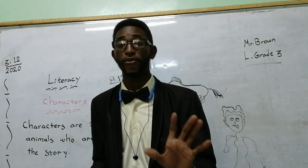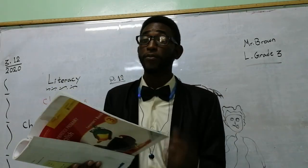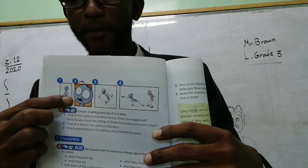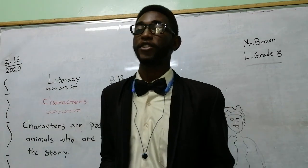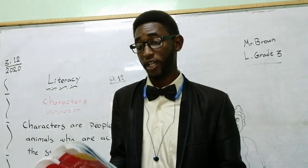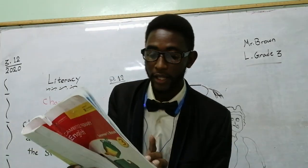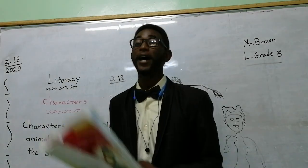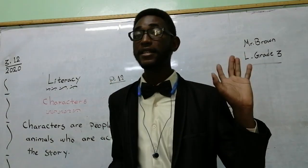Number two: write a description of the main character using interesting words to make him or her come to life. For example, if you named the character Tina, describe Tina using adjectives — the adjectives should be interesting. Number three: create another character of your own from your mind, and this is easy.